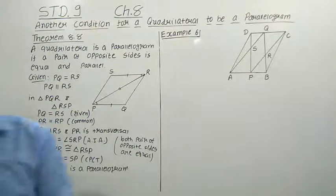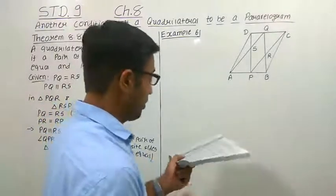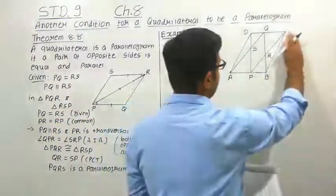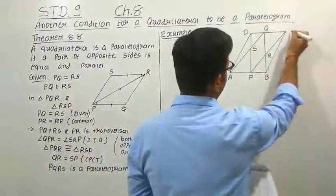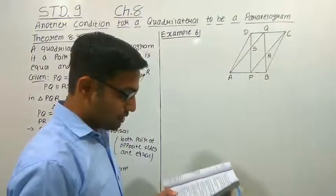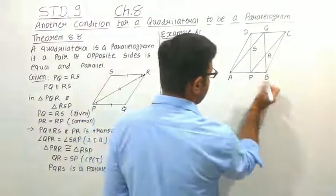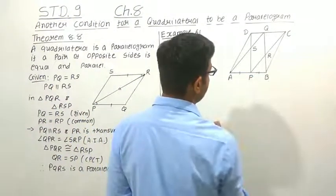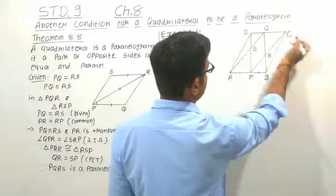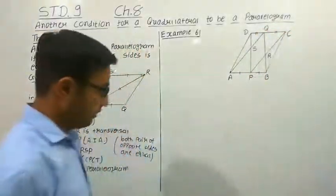Here we have given that ABCD is a parallelogram. P and Q are the midpoints of opposite sides AB and CD. P is the midpoint of side AB, so this part and this part are equal. In the same way, Q is the midpoint of side DC, so this part and this part are also equal.